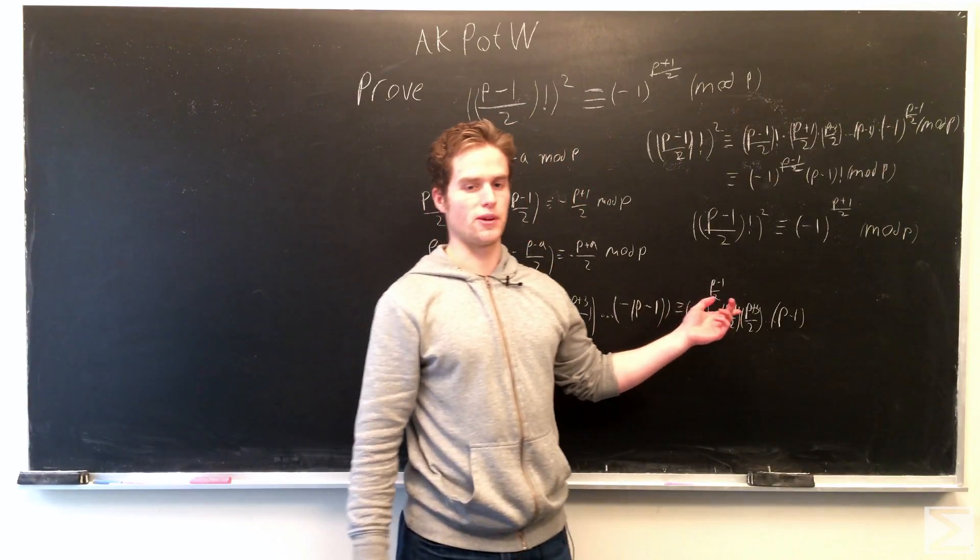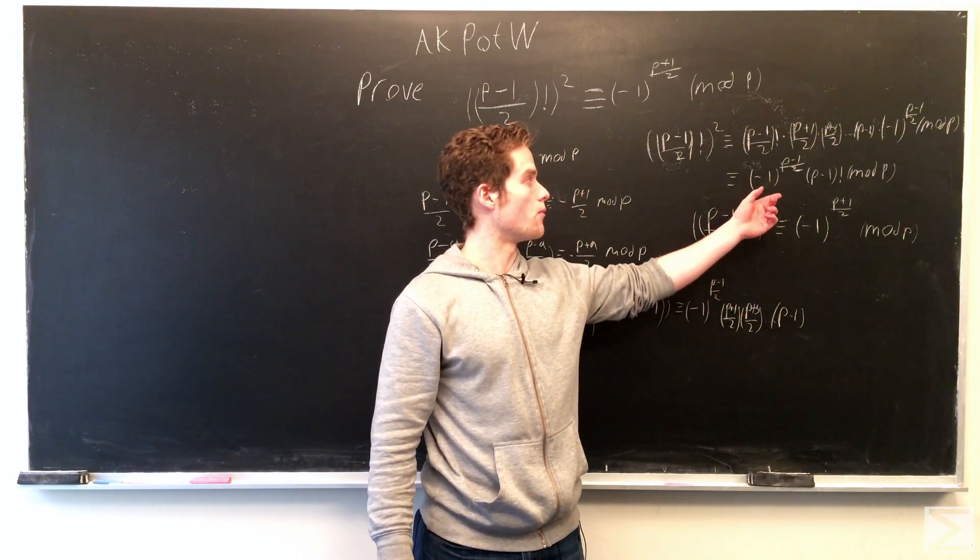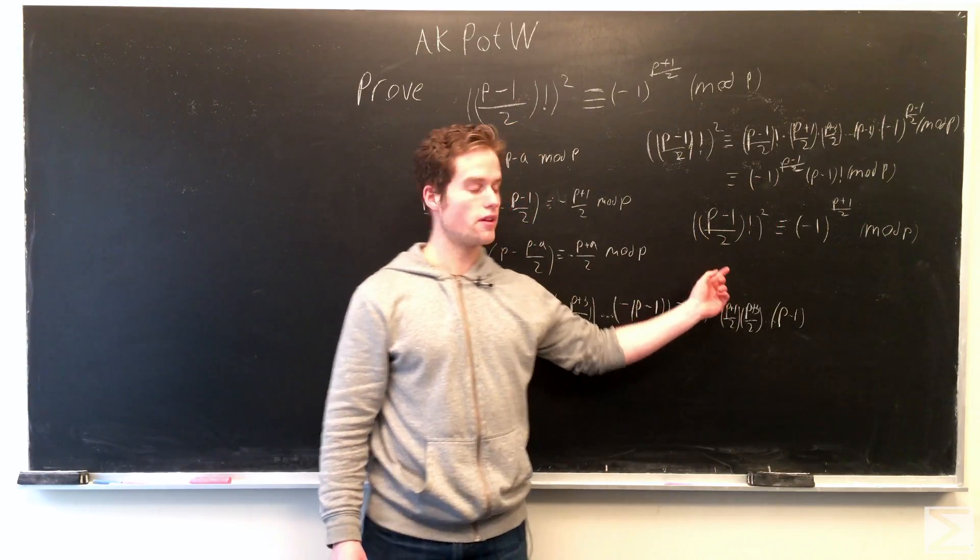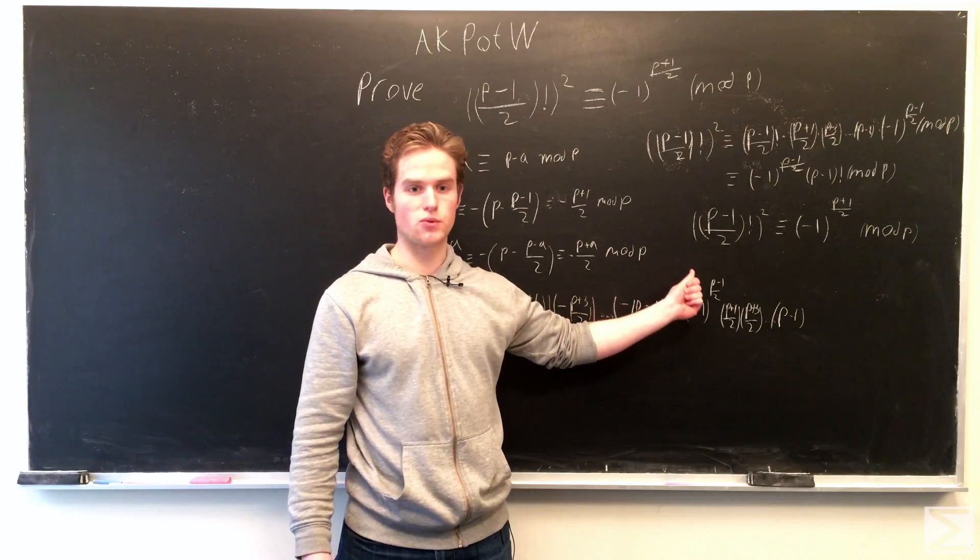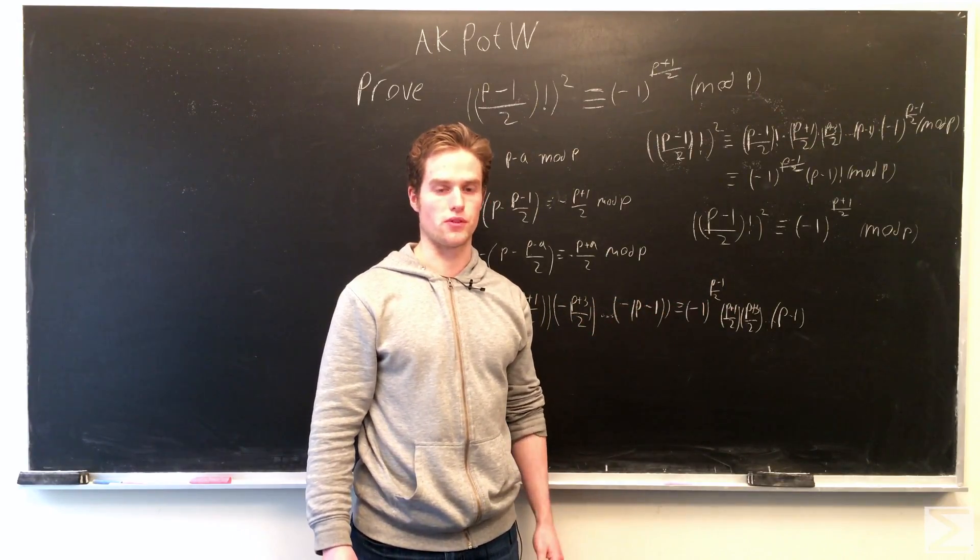And so, because (p-1)! is congruent to -1, 1+(p-1)/2 is (p+1)/2, and we get our result: (p-1)/2 factorial squared is congruent to (-1)^((p+1)/2) mod p.